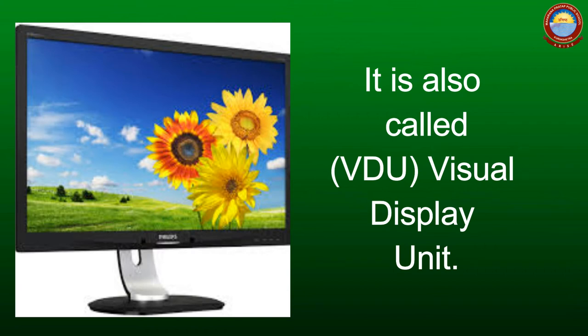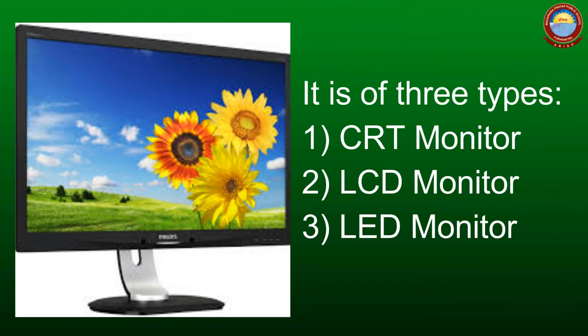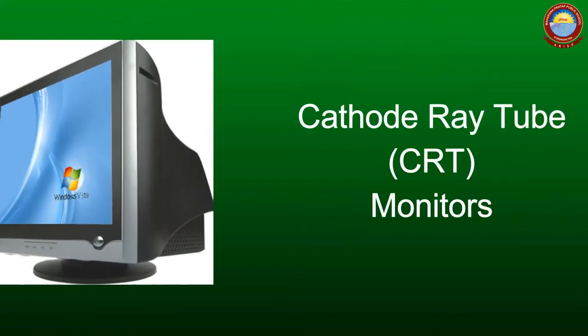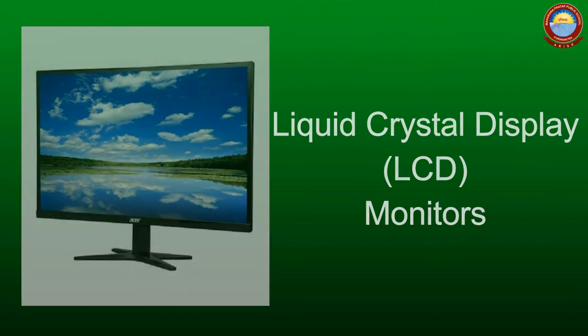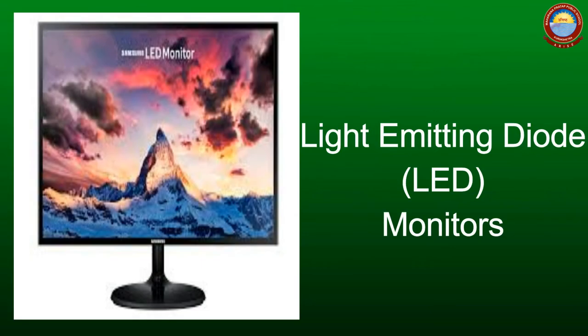First, monitor. It is also called a video display unit. Whatever work we do on a computer is displayed on the monitor. It is of three types: first, cathode ray tube, which looks like a box; second, liquid crystal display, which has a flat screen and is much lighter than CRT monitors; third, light emitting diodes, which are the latest type of monitors. They consume less power than CRT and LCD.